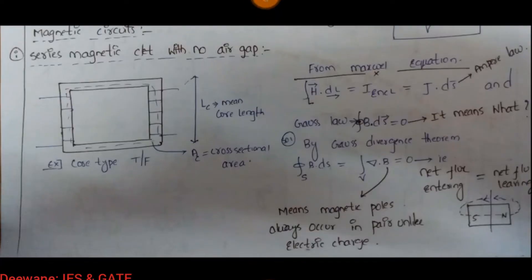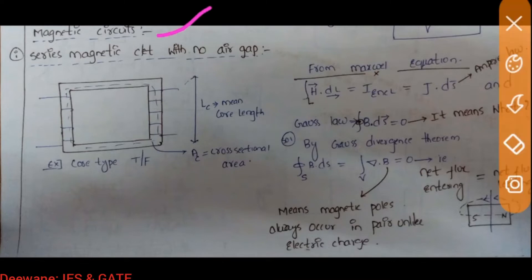Hi, welcome once again to the sixth video in the course on electrical machines. A total of five videos have been uploaded previously. This is the sixth video, and the most important topic to be discussed today is magnetic circuits. One problem on this topic came in GATE 2019 — a two-mark question — and at the end of this video I have discussed the question and solution.